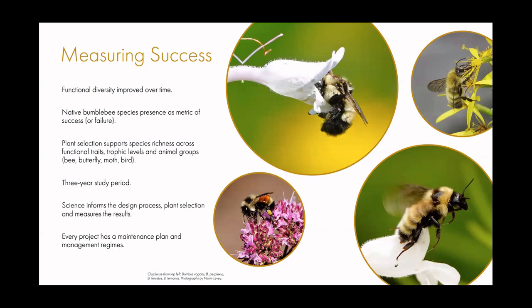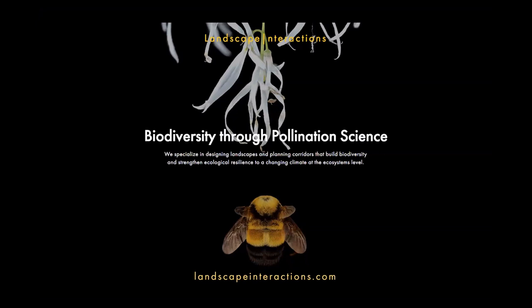Throughout our project sites at Landscape Interactions, we try to measure the success of landscape design or planning based on improving functional diversity over time. We use native bumblebee species largely as a metric of success or failure — if we have a wider range of species, especially at-risk species, after plants and management guidelines have been implemented than before the project began, then we've created a more biodiverse site. We usually study our sites over a three-year period. My website is landscapeinteractions.com, and I look forward to taking questions from the group.